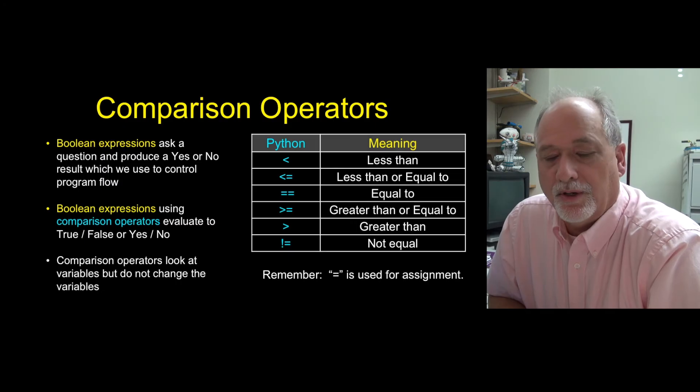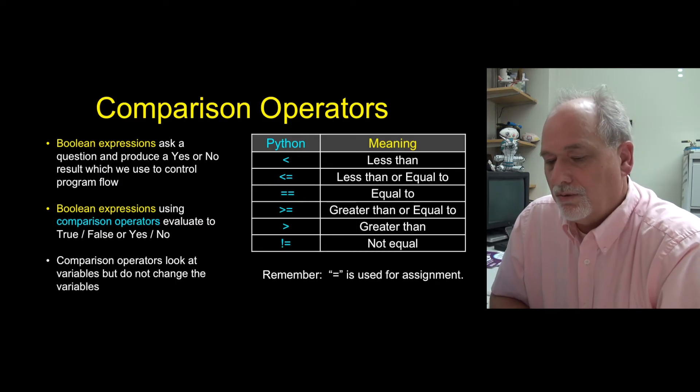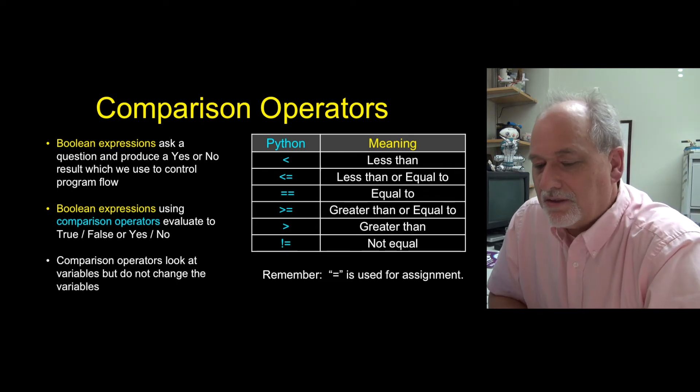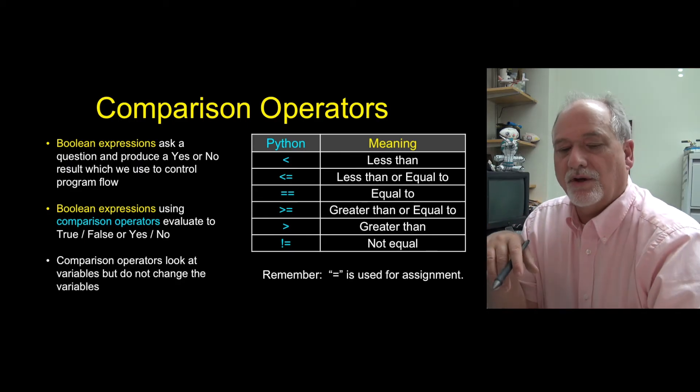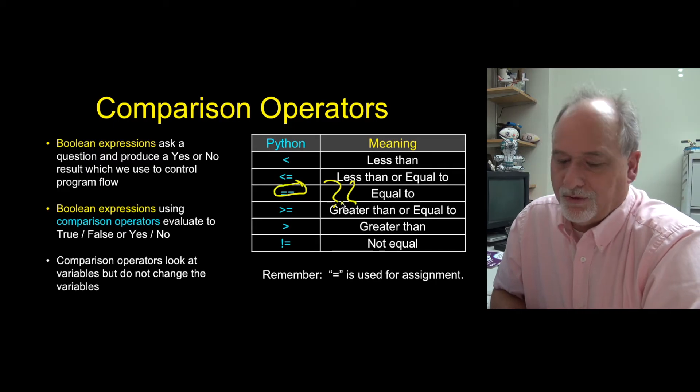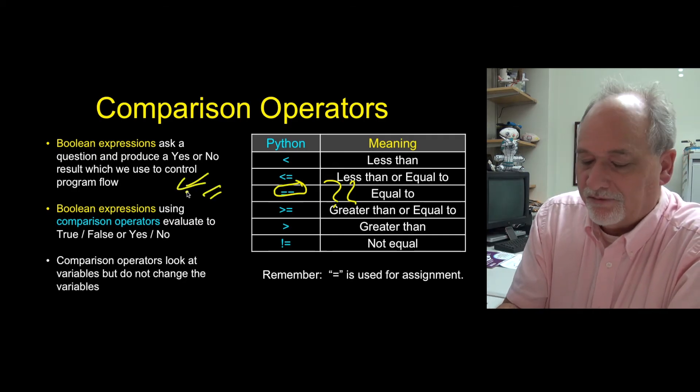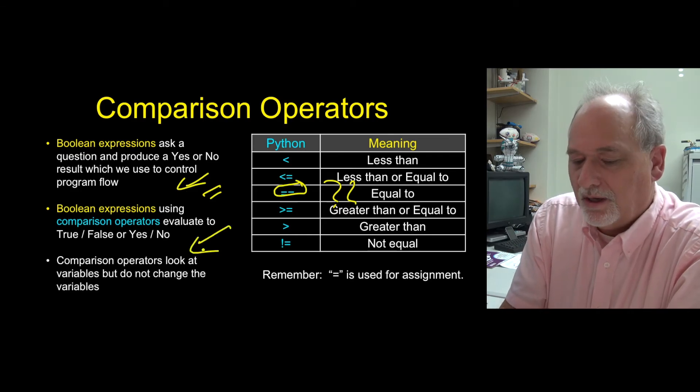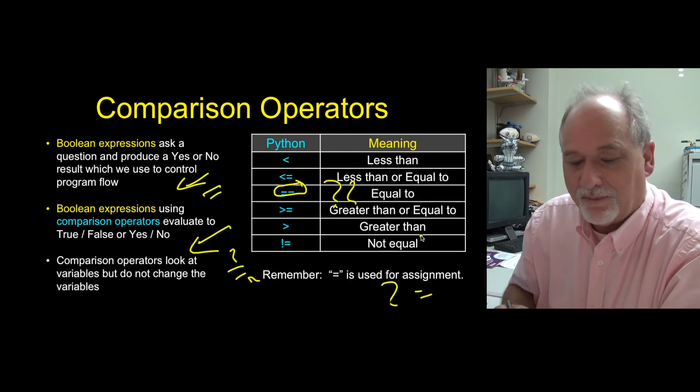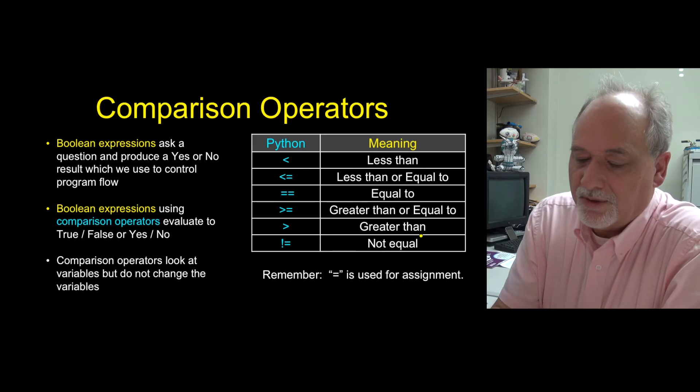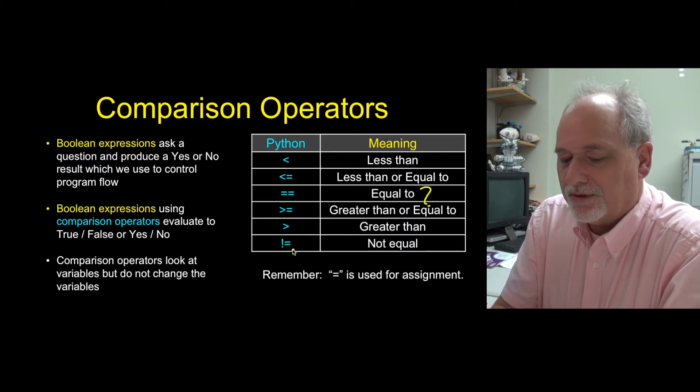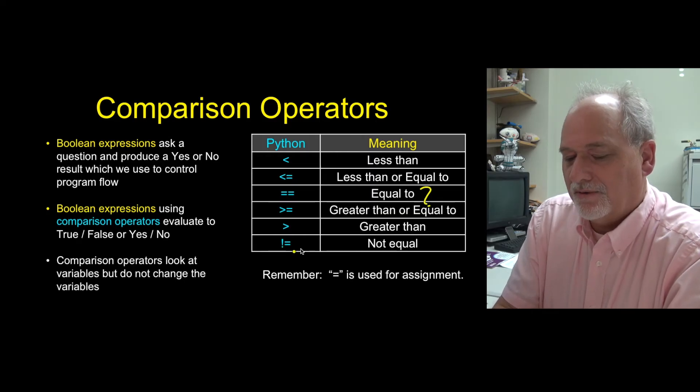So we have a number of different comparison operators that we can use to ask these true false questions. We're kind of limited to the keys that were on computer keyboards in the 1940s and 1950s. Less than, less than or equal to, we concatenated less than and equals to be less than or equal to. This double equals is asking is this equal to, and that's a little tricky. The equals sign is the assignment operator.